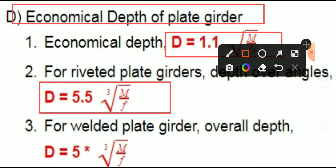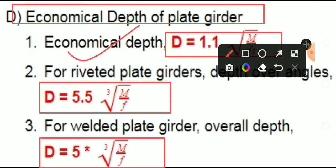For a rebated plate girder that formula uses a cube root. And for a welded plate girder, the overall depth d is equal to 5 times the cube root of M divided by f. These are the economical depth formulas of the plate girder.